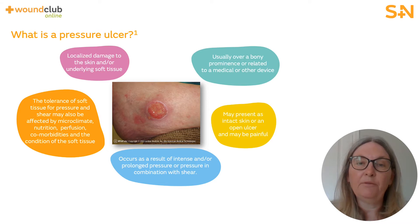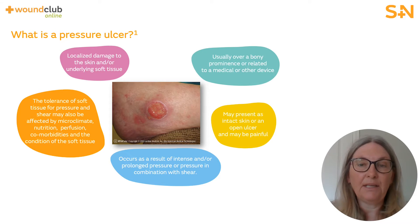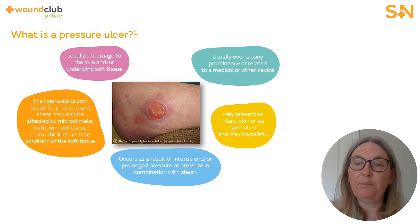A pressure ulcer is defined as localized damage to the skin and/or underlying tissue. The ulcer is usually over a bony prominence, for example heels or elbows.